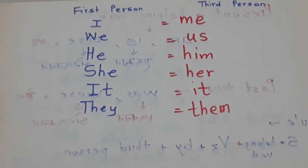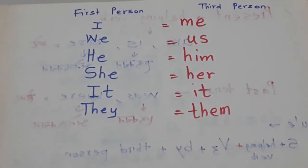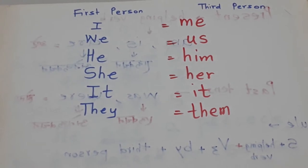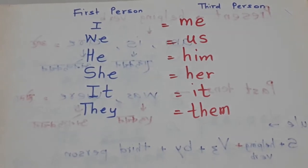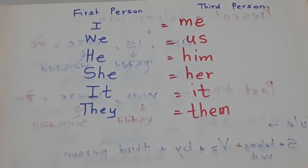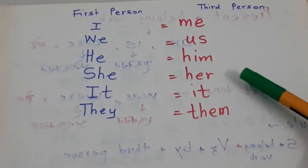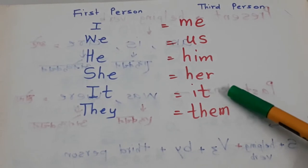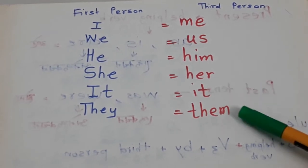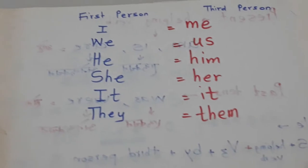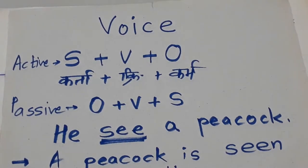The first and important is first person and third person. These have great importance in voice. I becomes me in passive voice. We becomes us, he becomes him, she becomes her, it remains it, they becomes them. These rules you should have with you as they will be useful.